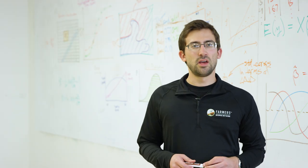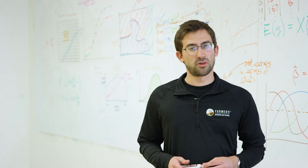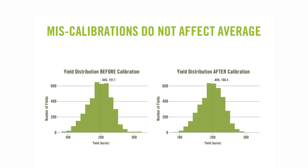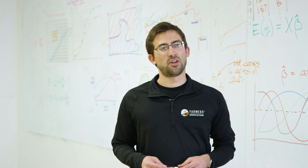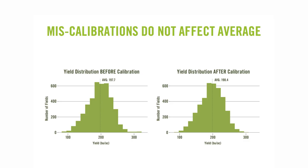One of the ways we address that at FBN is by encouraging farmers to submit weight tickets from their grain sales. We looked at the distribution of yields from monitors and then after calibrations were applied, and the remarkable pattern is that in aggregate the yield difference between these two data sets is almost negligible — less than one bushel an acre. The fact that we've aggregated a lot of data together lets us get around the issue of monitor calibration with a very high degree of confidence. In a small data set, an individual miscalibration could have a really big impact.